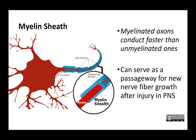Having a myelin sheath means an axon can carry a signal more rapidly than if it's unmyelinated. If you have two axons of the same length — one myelinated, one unmyelinated — the one with the myelin sheath is going to send a signal faster. Finally, in the peripheral nervous system, the myelin sheaths provided by Schwann cells can serve as a pathway for axons to follow as they regrow toward their targets. If an axon is cut and starts to regrow, sometimes it finds its way back and sometimes it ends up innervating the wrong place. Myelin sheaths help guide axons to the correct location.